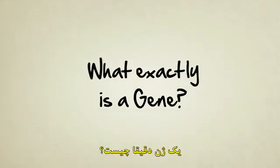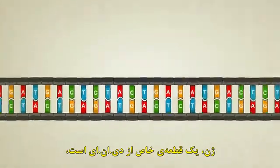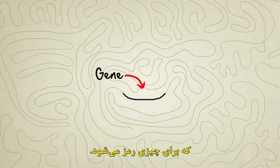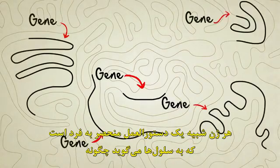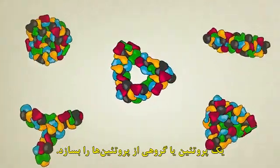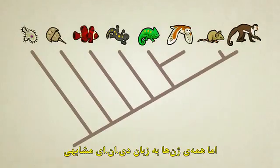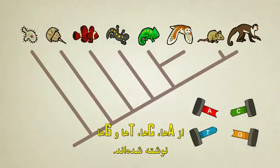So just to sum things up: What exactly is a gene? A gene is a special stretch of DNA — not the entire strand, just a segment — that codes for something. Each gene is like a unique recipe which usually tells a cell how to make a protein or a group of proteins. Different creatures have different genes, but all genes are written in the same basic DNA language of A's, C's, T's, and G's.